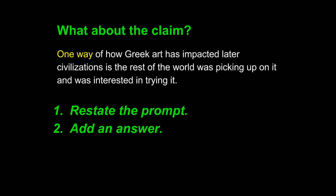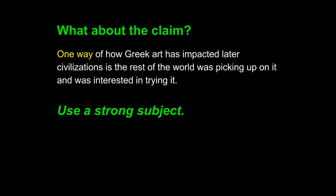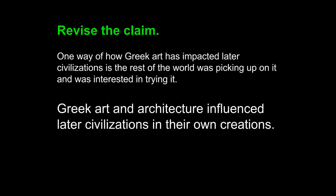'One way' is the problem here. 'One way' is not a strong subject, and the writer wants to make sure to use a strong subject — if you use a strong subject, you can write a strong claim. With this particular prompt, the strong subject was 'Greek art and architecture.' That's the subject of the prompt and should be used in the claim. The writer also wants to use a strong verb. The verb here is 'is,' and the entire sentence rests upon this weak verb. We can do better. The revised claim: 'Greek art and architecture influenced later civilizations in their own creations.' The sentence is clearer, has more authority, and does a better job of announcing what's happening in the rest of the paragraph. Notice the strong subject 'Greek art and architecture' and the strong cause-and-effect verb 'influenced.'